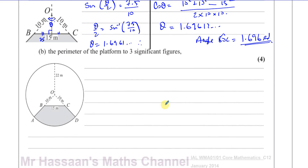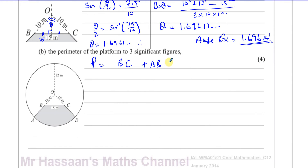Part B asks us to find the perimeter of the platform to three significant figures. The perimeter is made up of: BC, which we know is 15, plus AB, plus CD, plus the arc AD.